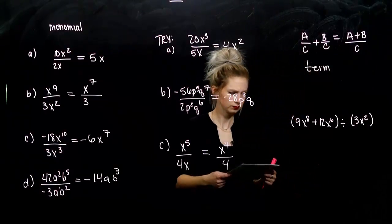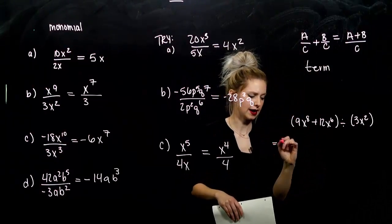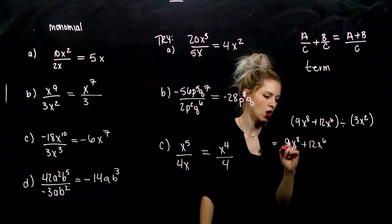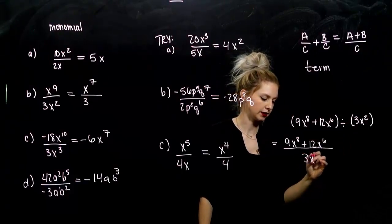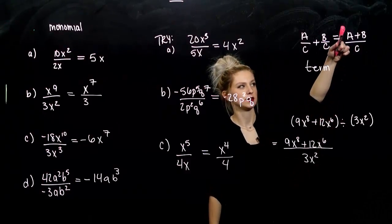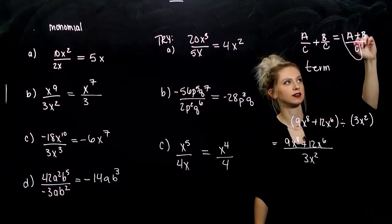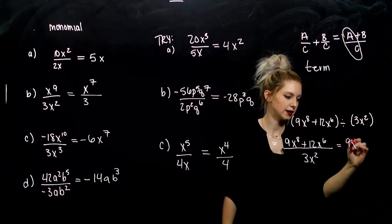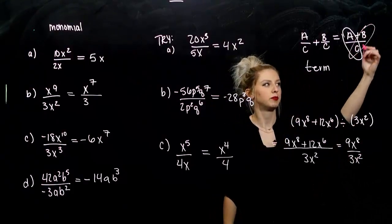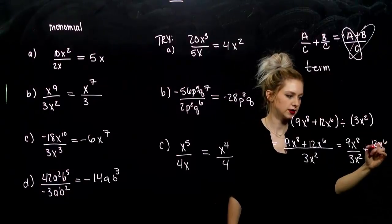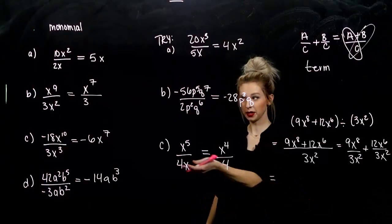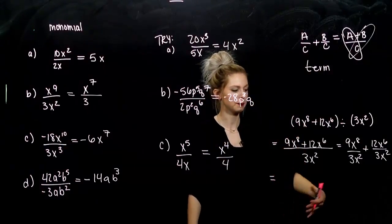So, the first example. We can rewrite this division as 9x to the 8th plus 12x to the 6th all over 3x squared. What we're dividing by. And now I know that I can split it up individually. So, the first part, a over c. So, 9x to the 8th divided by 3x squared. And then I can add to that a second part, b over c. So, 12x to the 6th over 3x squared.